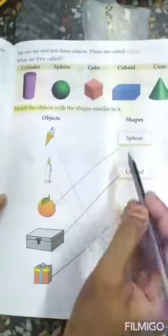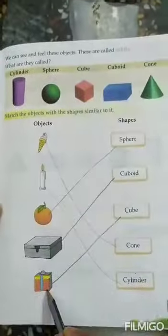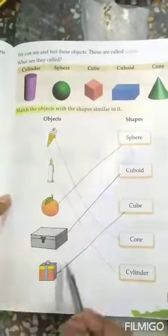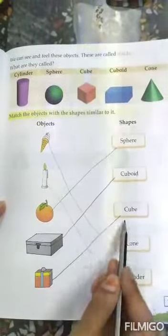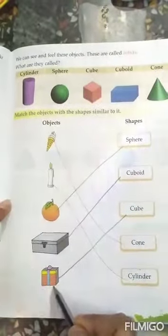of an orange? Sphere. What is the box? What is the shape of this box? Cuboid. What is the shape of this box? Gift box. Cube. Cube. I explained you when I am showing the shapes, yes or no. So